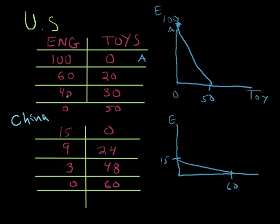In this particular case we said the US is going to make 40 engineering and 30 toys, and you end up with a dot like there. And China is going to produce something like 9 engineering and 24 toys so they end up something like here. And that's where the two countries are on those two dots.